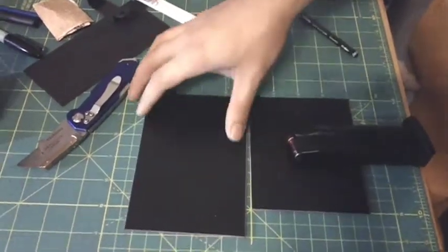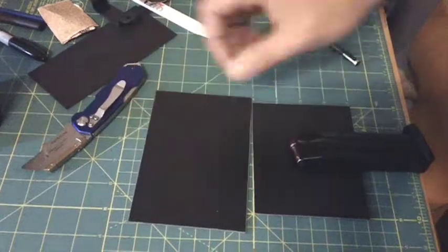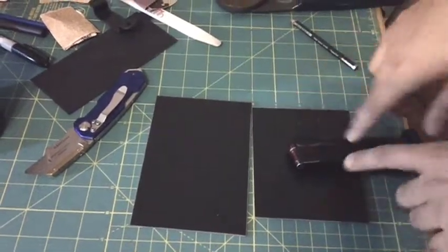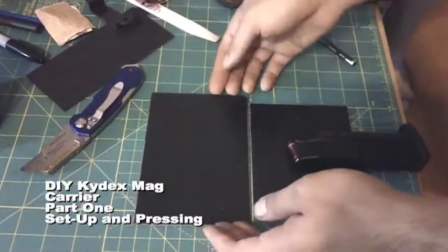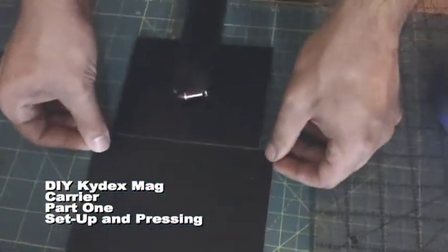So what we're doing today is making a magazine carrier for a single mag, double stack magazine. What you can see here is that we've already cut these two pieces of kydex.